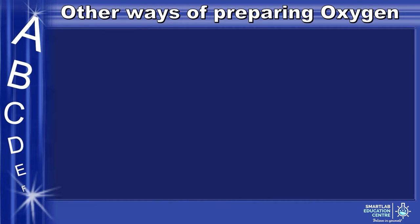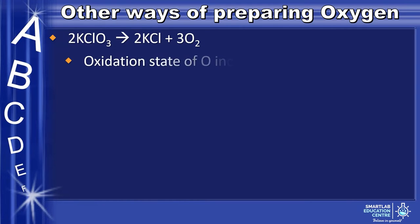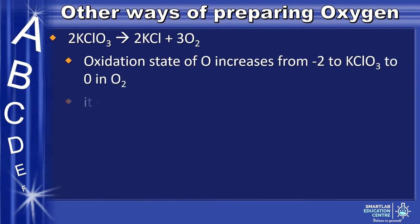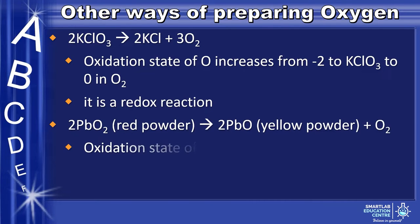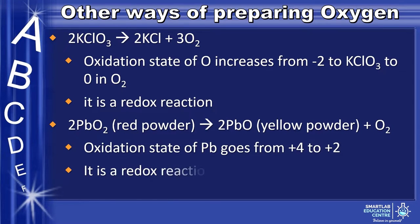Another way of preparing oxygen is with the compound KClO₃, where it forms oxygen, and the oxidation state of O increases from -2 to 0, making this a redox reaction. The last way to prepare oxygen is to use lead oxide, a red powder, where the oxidation state of lead goes from 4 to 2, and therefore this is a redox reaction as well.